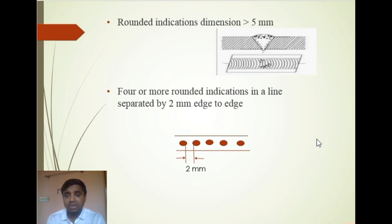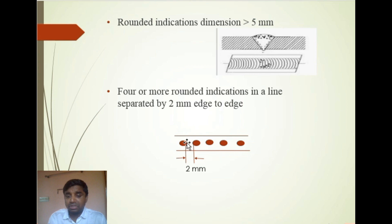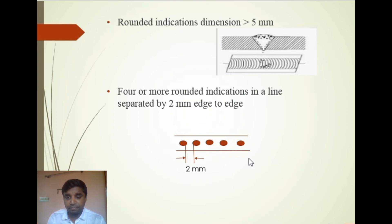Rounded indications with any dimension greater than 5 mm are also unacceptable. Additionally, four or more rounded indications in a line, separated by 2 mm edge-to-edge, are not acceptable. As shown in the sketch, if four or more rounded indications are aligned and each gap between them is 2 mm or less, there is a high chance they will merge into one continuous defect — hence they are unacceptable.